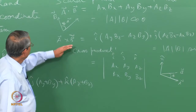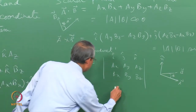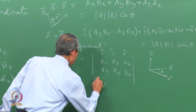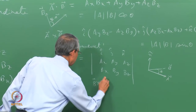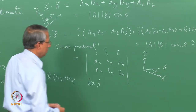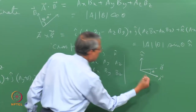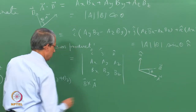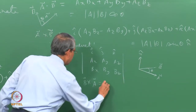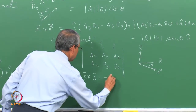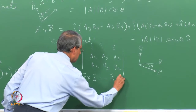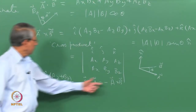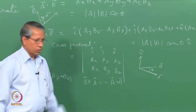Naturally, if I change the order of multiplication to B cross A, then I should go from B to A, so it comes in the opposite direction. Therefore, B cross A equals minus A cross B. So you see, in a vector product, the order is important.